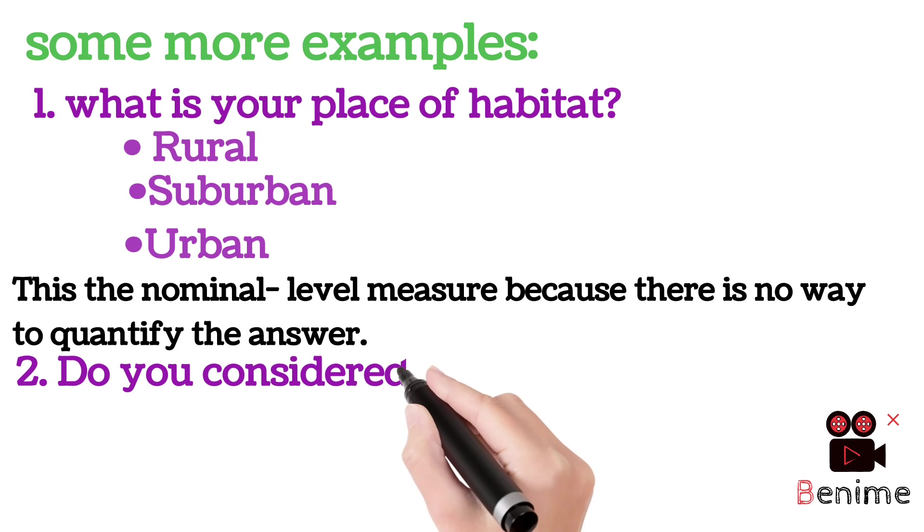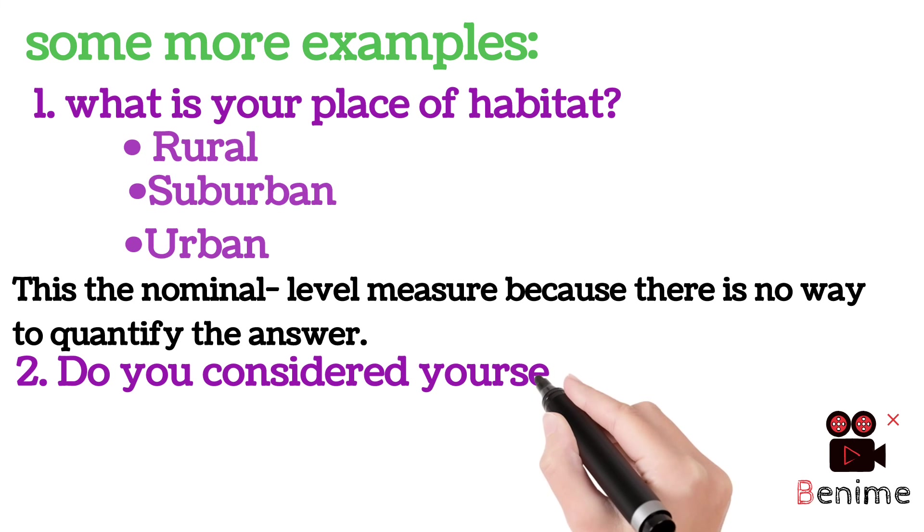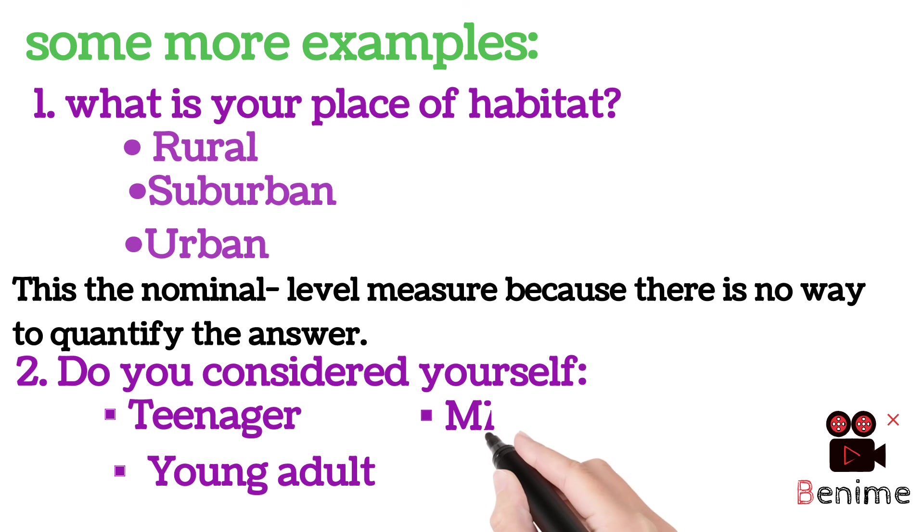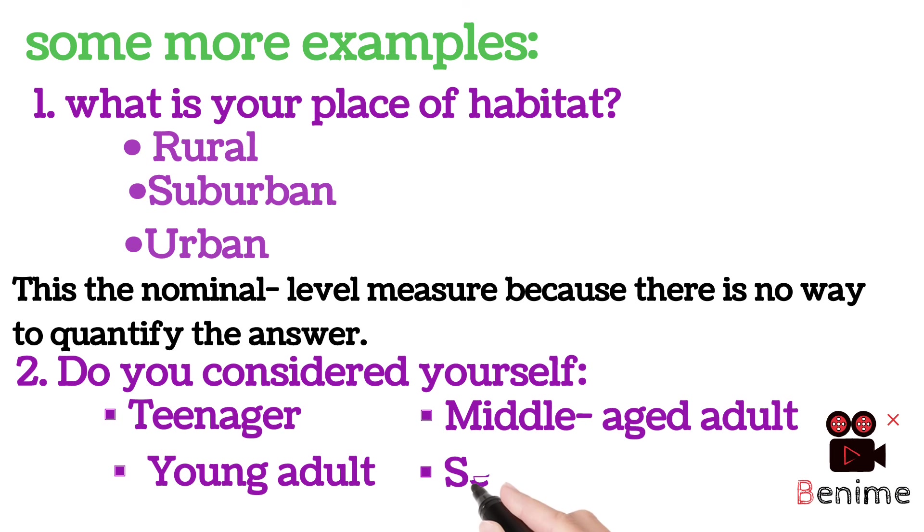Second one, do you consider yourself? How we consider ourselves? We rank the object. First one, teenager, young adult, middle aged adult, senior citizen.